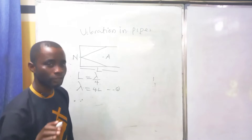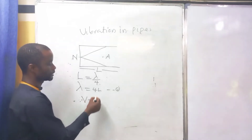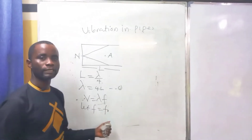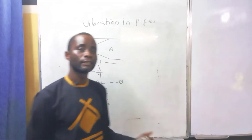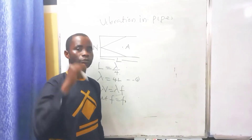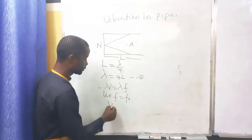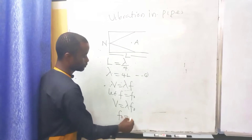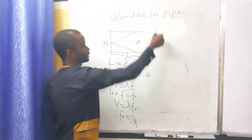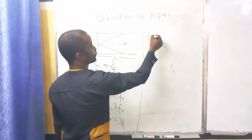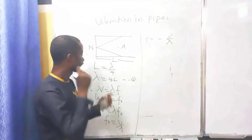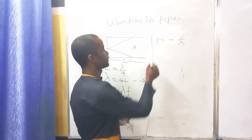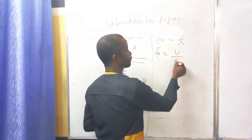Recall the general wave equation: V is equal to lambda times f. Let f-naught represent the fundamental frequency of a closed pipe — that is, the first note produced. Therefore, V is equal to lambda times f-naught, and making f-naught the subject: f-naught is equal to V over lambda. But from equation 1, lambda is equal to 4L, so substituting: f-naught is equal to V over 4L.